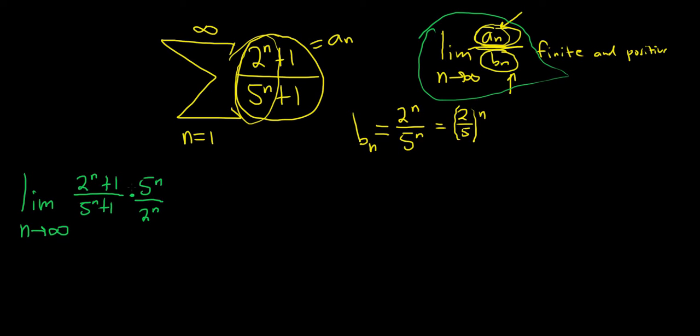And you can see here, just using intuition, that the leading terms are the same. So this is 2^n times 5^n up top. On the bottom, it's also 2^n times 5^n. So this limit should be equal to 1, which is finite and positive.